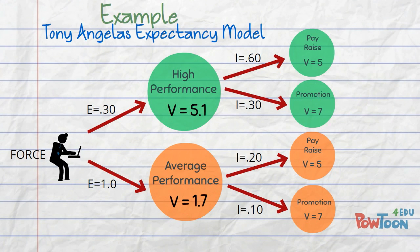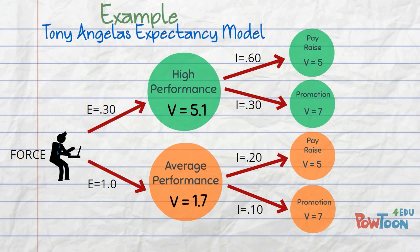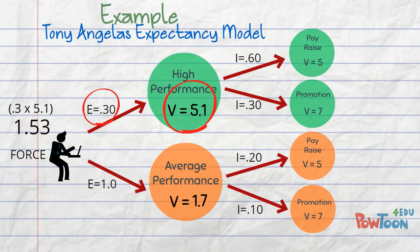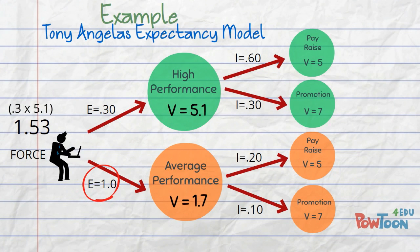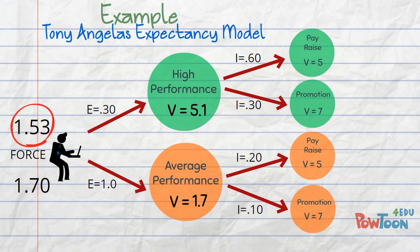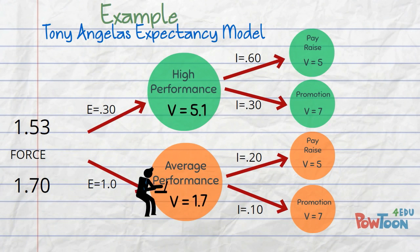Does this mean that Tony will try to perform at a high level? Not quite — we need to take into account Tony's expectancy. The force associated with high performance is 0.3 × 5.1, which gives us 1.53. The force associated with average performance is 1 × 1.7, which gives us 1.7. Therefore, 1.7 is greater than 1.53, and although high performance is more attractive to Tony, he will probably perform at an average level.